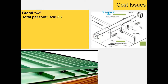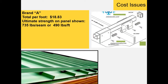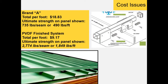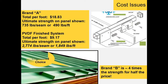Here's another competitive part — in this case both are mechanically attached. Brand A, taken from an actual job, had an ultimate strength on the panel seam of 490 pounds per linear foot of assembly. The color guard system was $9.17 for an ultimate strength of 1,849 pounds per linear foot. So brand B in this case is four times the strength and half the price.